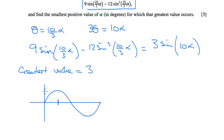A sine graph is at its peak here. And what's that value? That value is 90. So we want this 10 alpha to equal 90, so it's when alpha is 9.